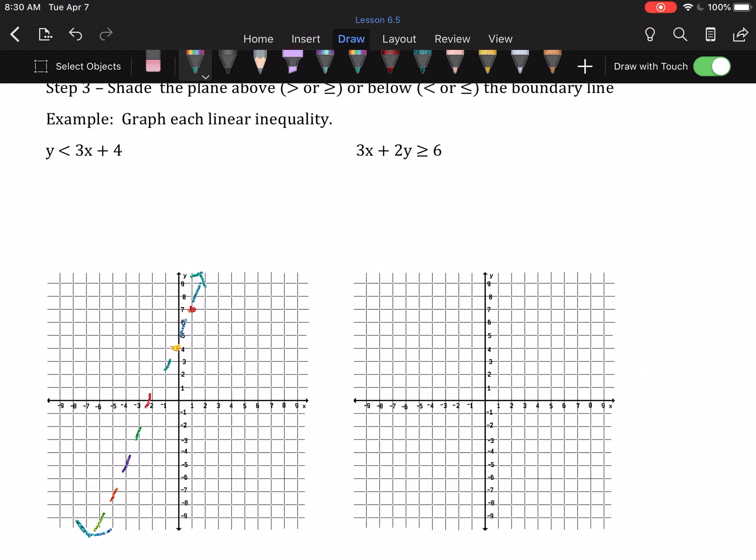Step 4 is to shade. Because this is a less than inequality, we shade below the line. And there we go.